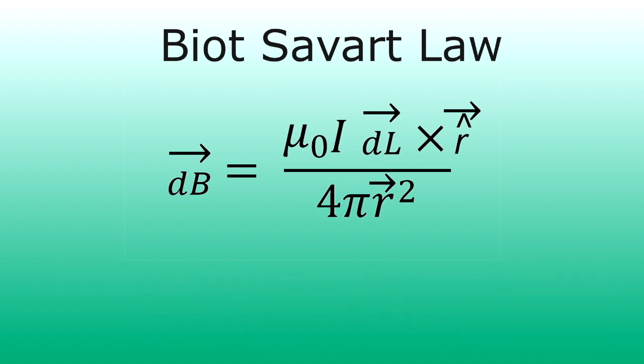The Biot-Savart law basically says that every little segment of wire, which we call dL for a small segment, with current I, will produce a little magnetic field dB, which is a small magnetic field.